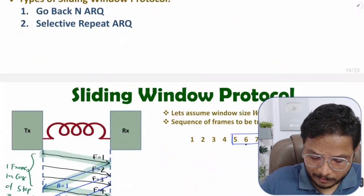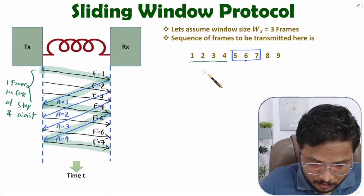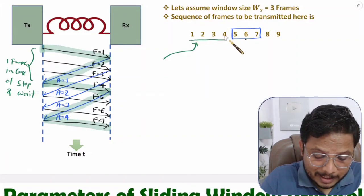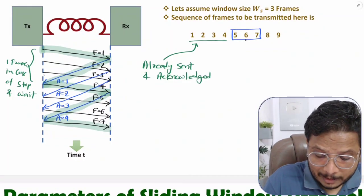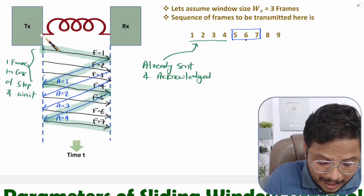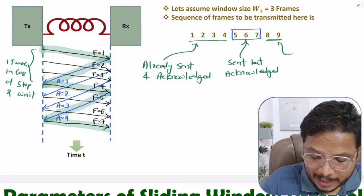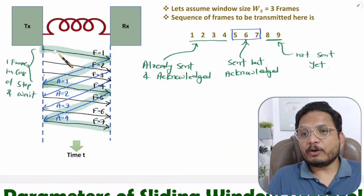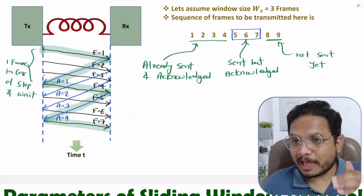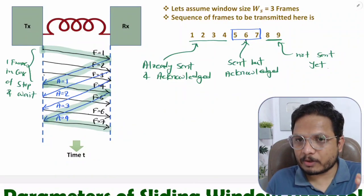There are some basic terminologies to understand. Frames that have already been sent and acknowledged by the receiver are completed frames. Frames inside the current window are frames sent by the transmitter but not yet acknowledged. Frames outside and ahead of the window are frames not sent yet. That is how sliding window protocol functions. In the next video I'll explain the parameters of sliding window protocols to help you solve related problems. Thank you for watching.